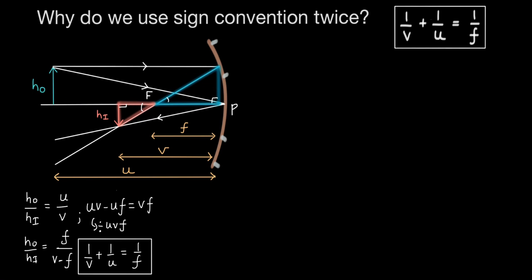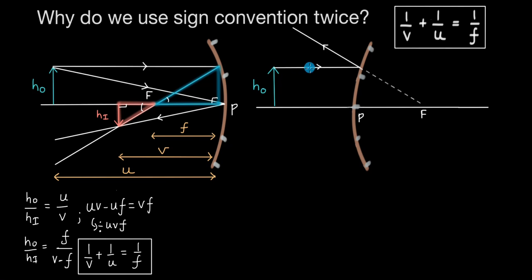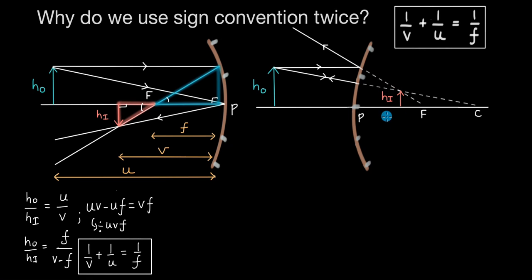Now let's bring in a convex mirror. Here we have the object on the left and a ray parallel to the optical axis. When reflected, it bounces back, but we can extend this ray to show it passing through the focal point. A second ray incident on the mirror at 90 degrees bounces straight back; when extended, it passes through the center of curvature. These two extended rays appear to meet at the position of the virtual image with height HI. Let's label U as object distance, V as image distance, and F as the focal length.